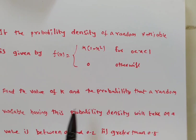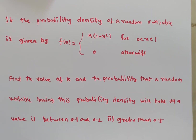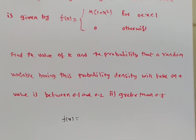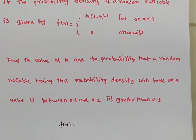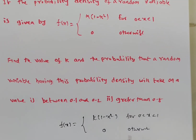We need to find the value of k, and then the probability that the random variable will take a value between 0.1 and 0.2, and second, greater than 0.5. Given f(x) equals k(1 minus x squared) for 0 less than x less than 1, and 0 otherwise. First, find k.